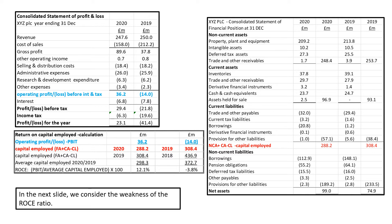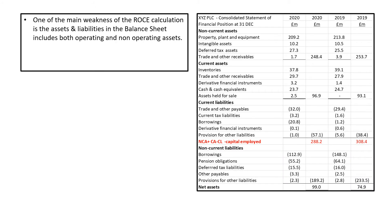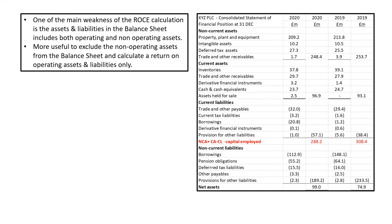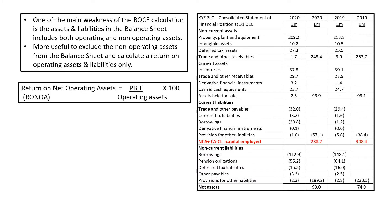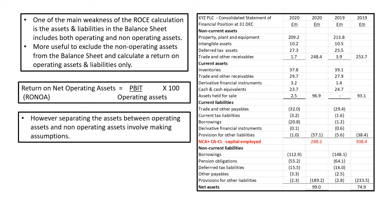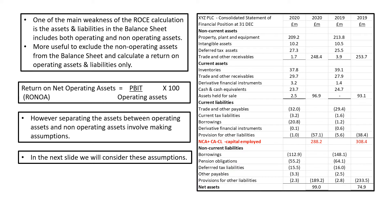In the next slide we consider the weakness of the ROCE ratio. One of the main weaknesses is that assets and liabilities in the balance sheet include both operating and non-operating assets. It would be more useful to exclude non-operating assets and calculate a return on operating assets and liabilities only. The formula uses PBIT as the numerator, but instead of capital employed as the denominator, we use operating assets. However, separating assets between operating and non-operating involves making some assumptions, which we will consider in the next slide.